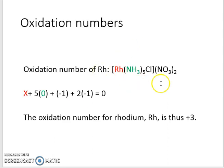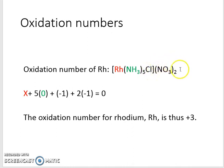So over here we have our metal complex. We have rhodium, we have a ligand — the ammonia ligand — we have a chloro ligand, and then we have the anion. We need to find the oxidation state of the rhodium, so that is why it is x.